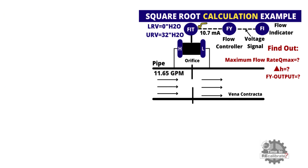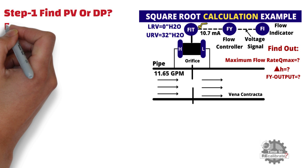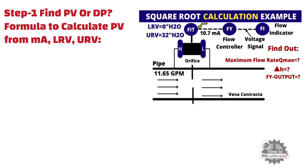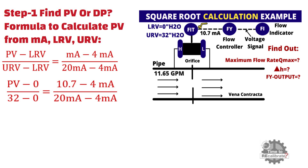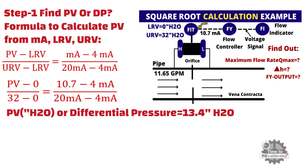Step number 1: Find the process value or differential pressure value. To find the process value, we have a standard formula to calculate it from milliampere, lower range value, and upper range value. Put the milliampere value, lower range value, and upper range value into this equation and do the simple math. You will get 13.4 inch H2O as the differential pressure value.